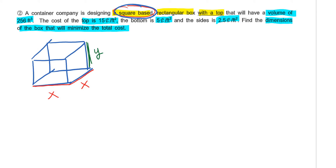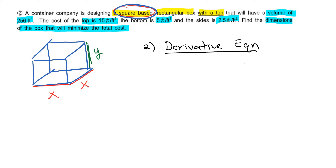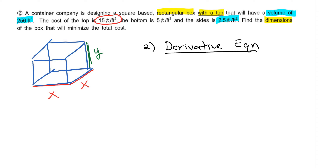For part two, you want to create your derivative equation. I want to find the dimensions of the box that will minimize the total cost. If you want to minimize the total cost, you're looking at how much it costs for the sides, the top, and the bottom. We need an area equation, but the area equation is also affiliated with the cost. The cost figures are in cents per feet squared — which has to do with area — so we need to find the surface area of the box and incorporate the cost for the top, bottom, and sides.